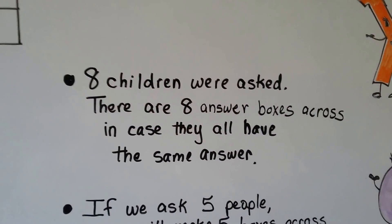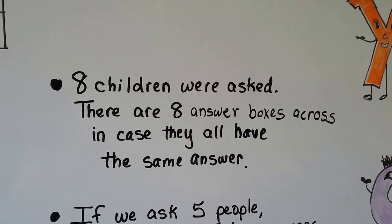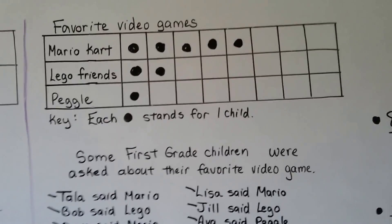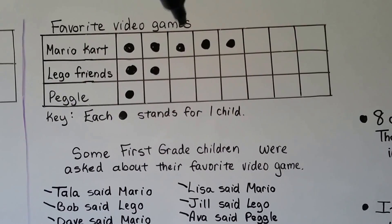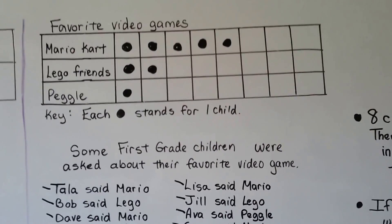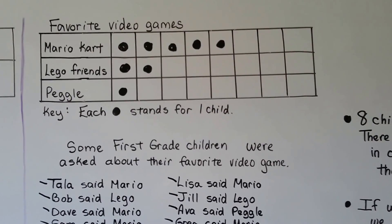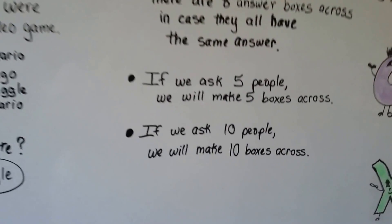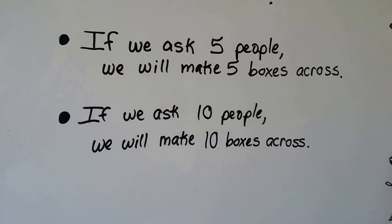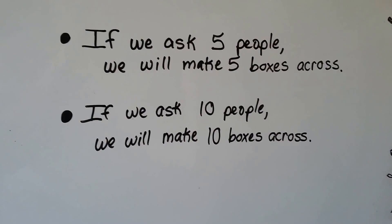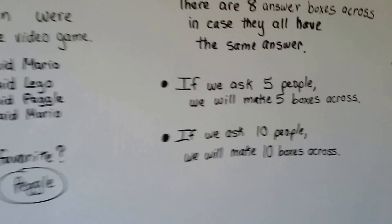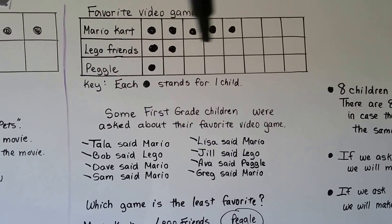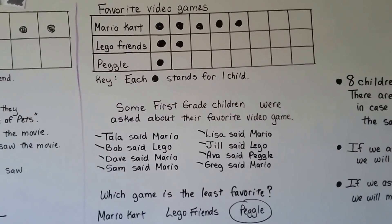Eight children were asked, so there are eight answer boxes across in case they all have the same answer — one, two, three, four, five, six, seven, eight boxes going across just in case they all gave the same answer, so there would be enough answer boxes. If we asked five people, we'd make five boxes across. If we asked ten people, we'd make ten boxes across. However many people we ask is how many columns of answer boxes we make going across.